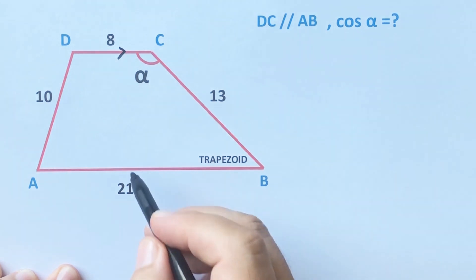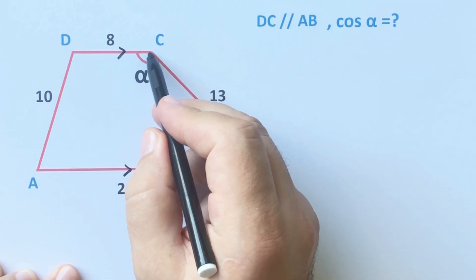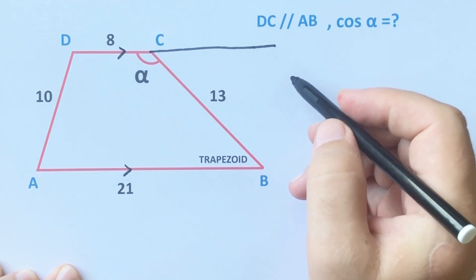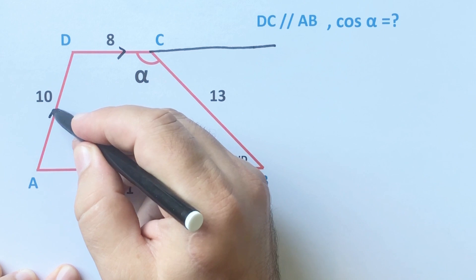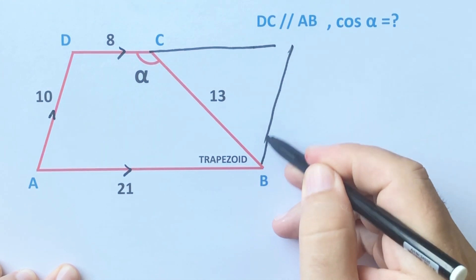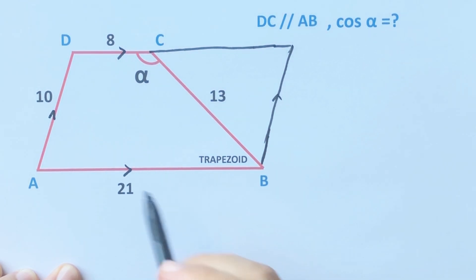Okay, first of all we know that DC and AB are parallel. Therefore, if we extend this corner like this and let's draw a parallel to AD, notice that we will get a parallelogram.